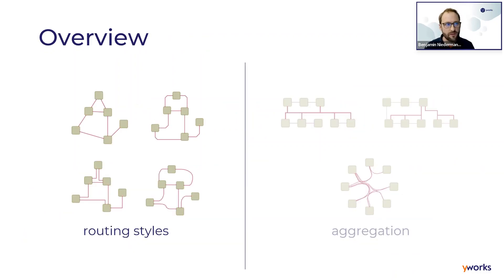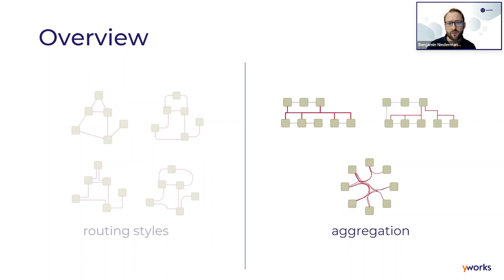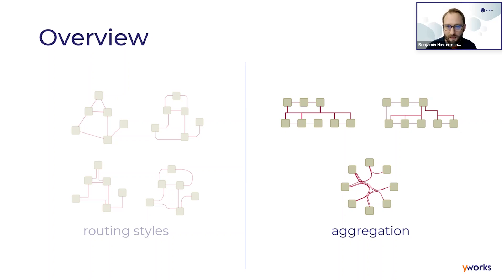This brings me to the next part of this overview — the aggregation of edges — which gives a further possibility to reduce visual complexity by summarizing edges. For example, in a drawing with multiple edges connecting the same nodes, the idea is to draw edges on top of each other to show their common structure.